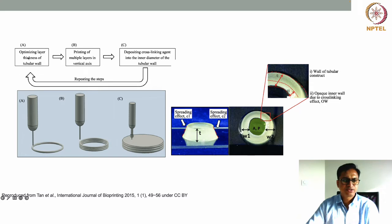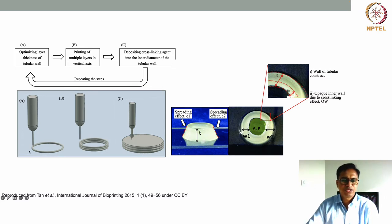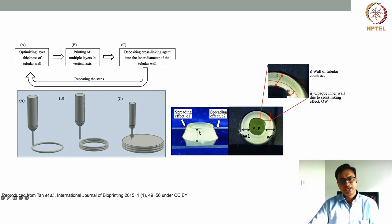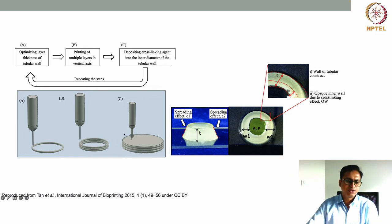They first optimized the layer thickness of tubular wire, then printed multiple layers in the vertical axis, depositing cross-linking agent — calcium chloride solution — into the inner diameter, repeating this step to reach 15 mm in height. The calcium chloride solution cross-links the structure from the inward to outward direction, stabilizing the structure. By stacking these concentric cylinders on top of each other, a tubular structure is obtained.